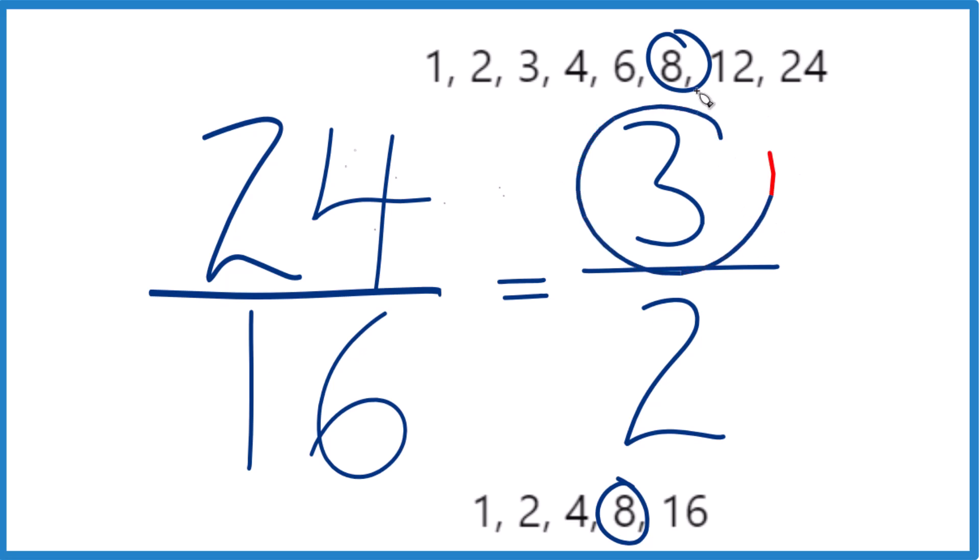Because 3, the numerator, is greater than 2, the denominator, this is an improper fraction.